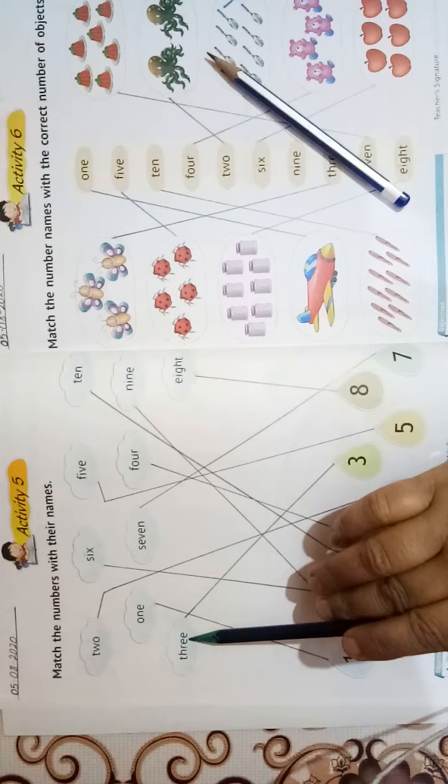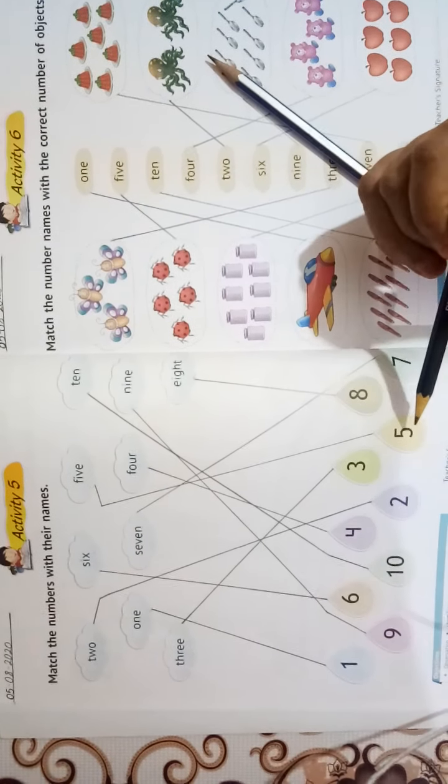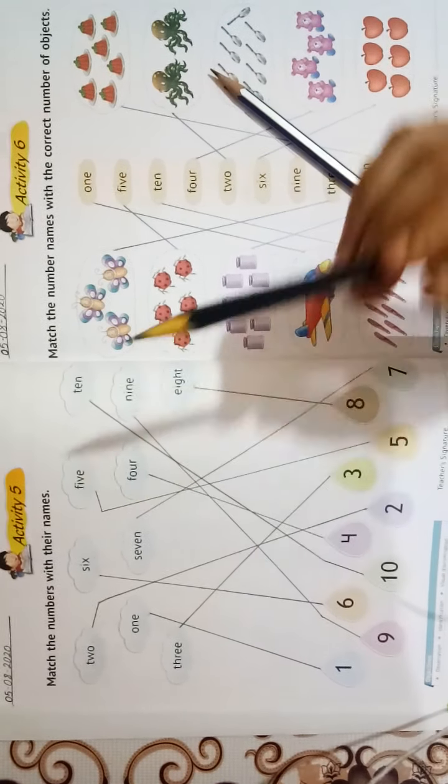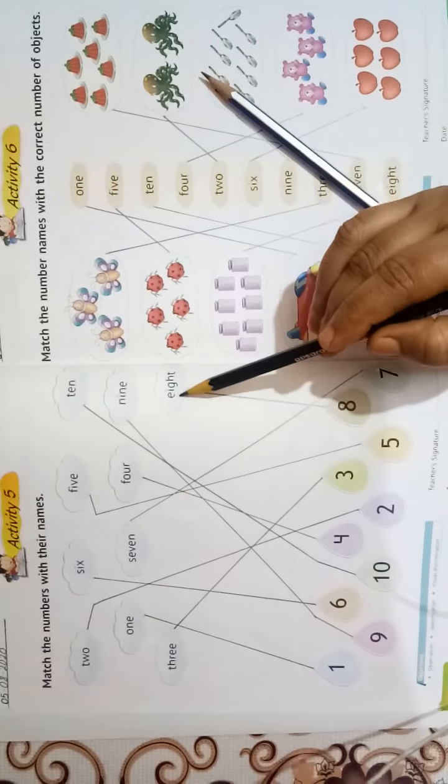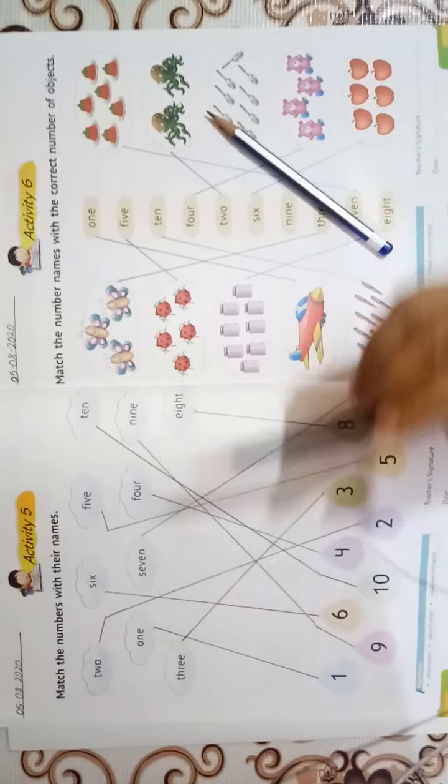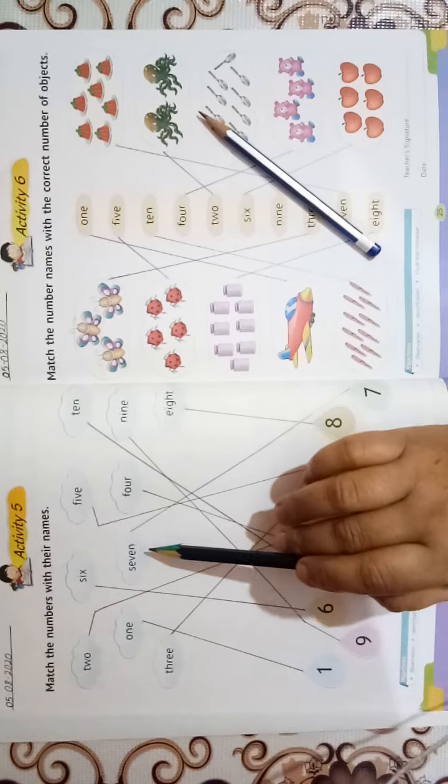Number 3 with T-H-R-E-E 3. Number 5 with F-I-V-E 5. Number 8 with E-I-G-H-T 8. Number 7 with S-E-V-E-N 7.